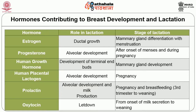Progesterone takes place in alveolar development, after onset of menses during pregnancy. Human growth hormone (HGH) is involved in the development of terminal end buds during mammary gland development. Human placental lactogen (HPL) takes place in alveolar development. Prolactin takes place in alveolar development and milk production, developing during pregnancy and breastfeeding, especially from the third trimester to weaning. Oxytocin takes place in let-down activity, developing from the onset of milk secretion to weaning.